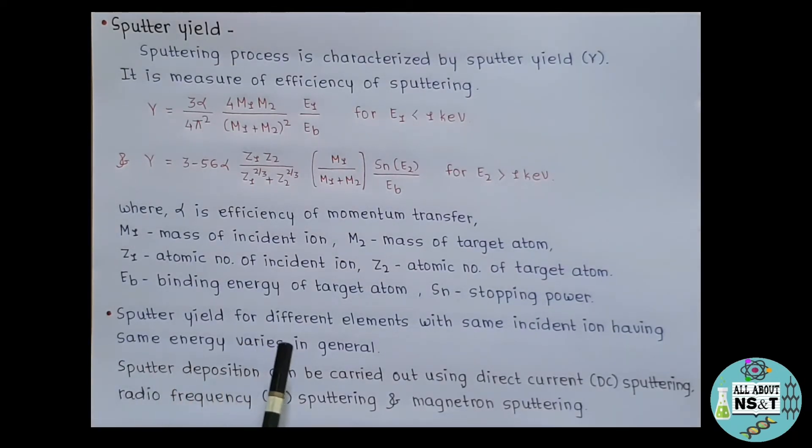Sputter yield for different elements with same incident ion having same energy varies in general. This means that, if a target consists of two different elements or more, then the element with higher sputter yield should get incorporated in larger quantity than others. But, in fact, higher sputter yield elements get depleted fast and other elements also make their contribution in deposition. And in this way, stoichiometry is achieved in the deposited films.